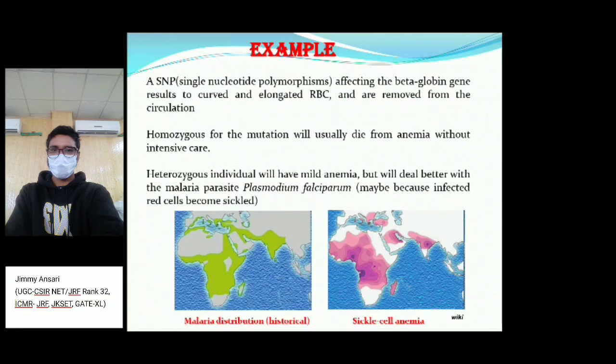Another example is single nucleotide polymorphisms (SNPs) affecting the beta-globin gene, resulting in a sickle-shaped (elongated) RBC that is removed from circulation. In individuals homozygous for this mutation, all RBCs are sickle-shaped and the individual will generally die from anemia without intensive care. In heterozygous individuals, there is mild anemia, but they deal better with the malarial parasite Plasmodium falciparum.